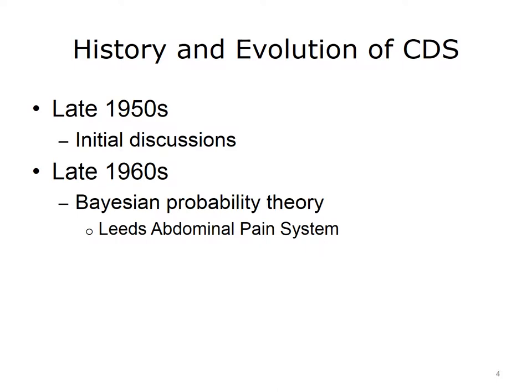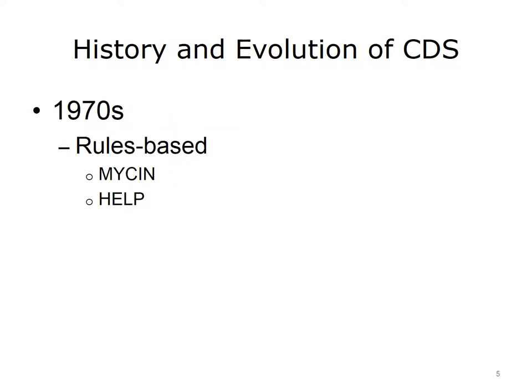Computer-assisted clinical decision-making has been considered viable since the late 1950s when initial publications appeared. Then, in the late 1960s, the Leeds Abdominal Pain System was created at the University of Leeds, built based on computer-based decision aids using Bayesian Probability Theory. The theorem is based on rules of predictive probability, and a clinical decision support system may use Bayesian logic in its inference engine. Other systems key in the evolution of CDSS are Meissen and HELP, both of which used rule-based approaches.